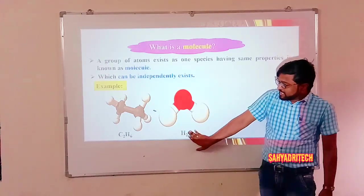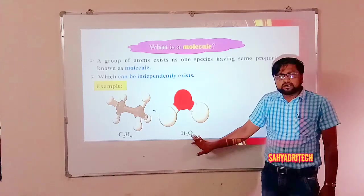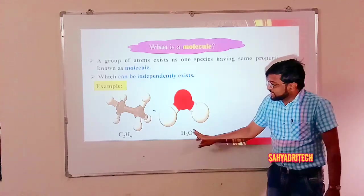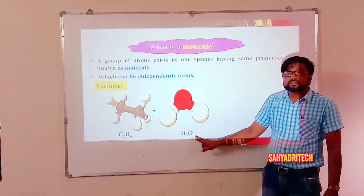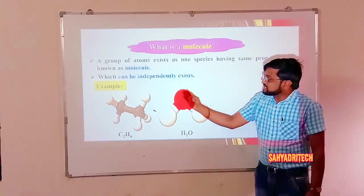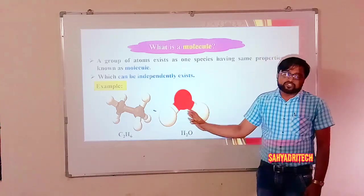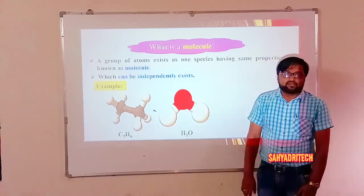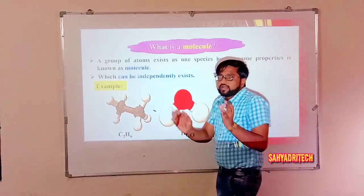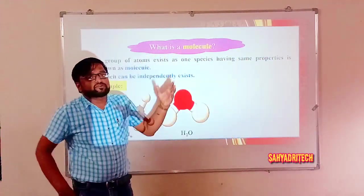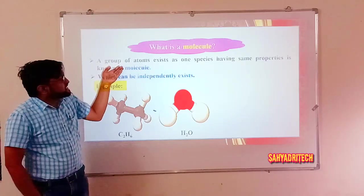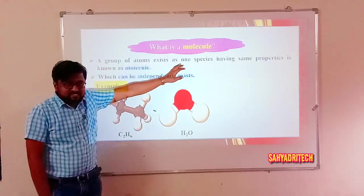Similarly for water, H2O: individually, hydrogen atoms and the oxygen atom are unstable. But when two hydrogen atoms and one oxygen atom combine, the resultant is a stable molecule — the H2O molecule is formed. So generally, when atoms combine the resultant is a molecule — a group of atoms existing as one species.